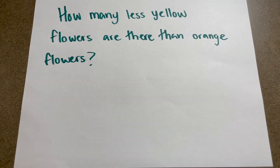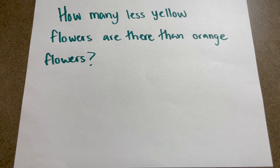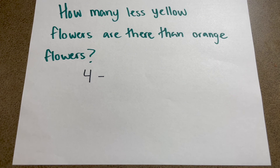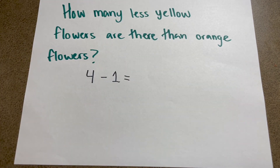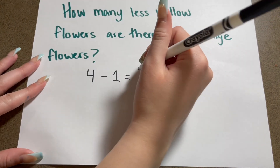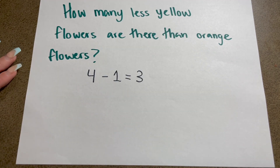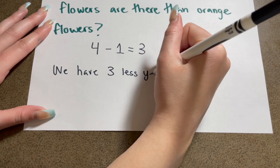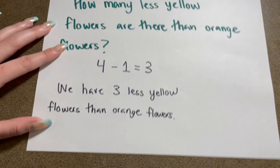One more question before we're done with our picture graph: how many fewer yellow flowers are there than orange flowers? How many orange flowers? Four. And how many yellow? One. So four minus one equals three. That means we have three less yellow flowers than orange flowers. Let's write: we have three less yellow flowers than orange.